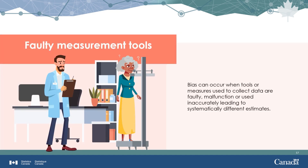Bias can occur when tools or measures used to collect data are faulty, malfunction, or are used inaccurately, leading to systematically different measurements. For example, a scale in a doctor's office that is improperly calibrated will consistently report incorrect weights.